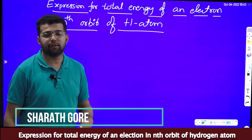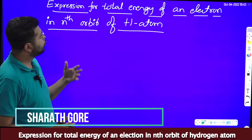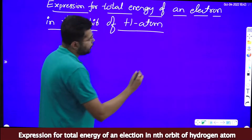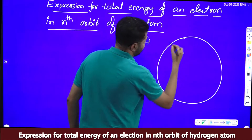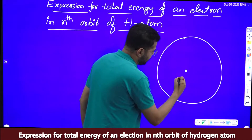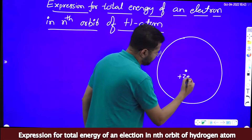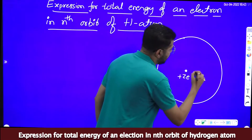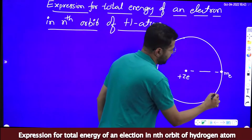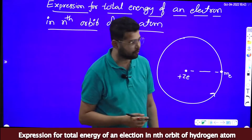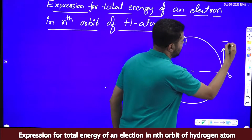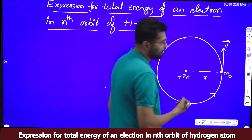Hello dear students. In this video we are going to derive an expression for total energy of an electron in the nth orbit of hydrogen atom. Let us suppose that an electron is revolving around the nucleus. The charge of the nucleus is plus Ze, where Z stands for atomic number, and one electron having mass m is revolving around the nucleus in the anticlockwise direction. The velocity of the electron is v and the radius of the electron orbit is r.